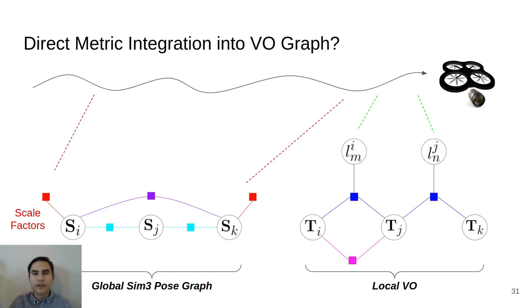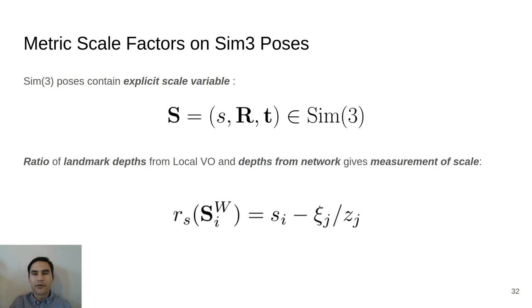Each pose in the global pose graph is defined over SIM-3, which is composed of rotation, translation, and an explicit scale variable. This allows trivial integration of our metric depth data by adding unary scale factors onto the scale variable that measured the discrepancy between the current scale estimate and that given by the network. The accumulation of these scale factors over the entire pose graph allows the true metric scale to be accurately inferred.